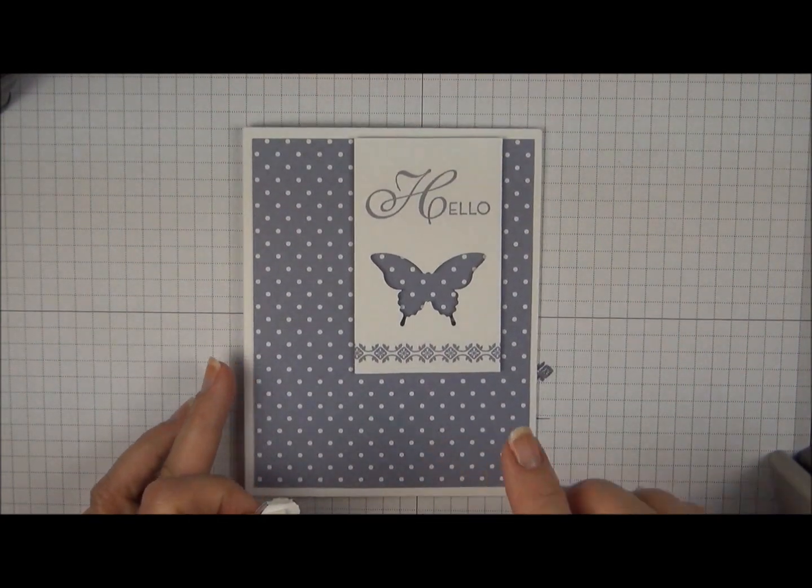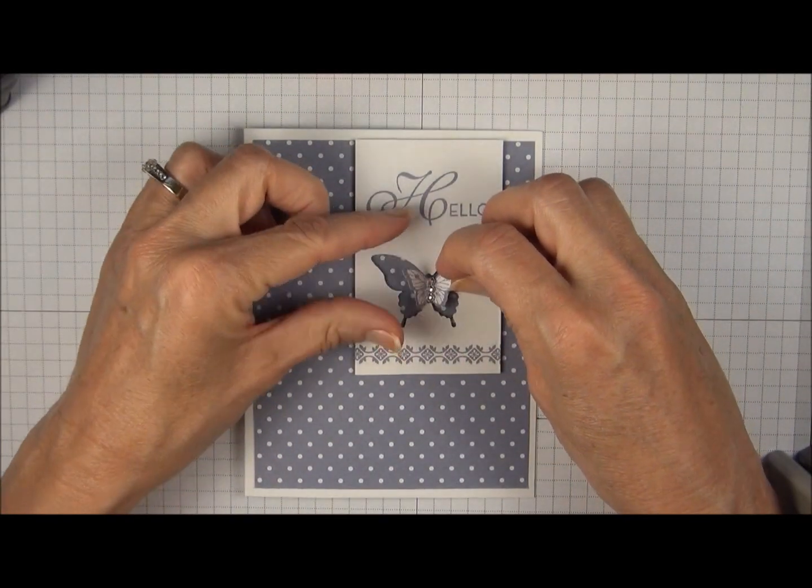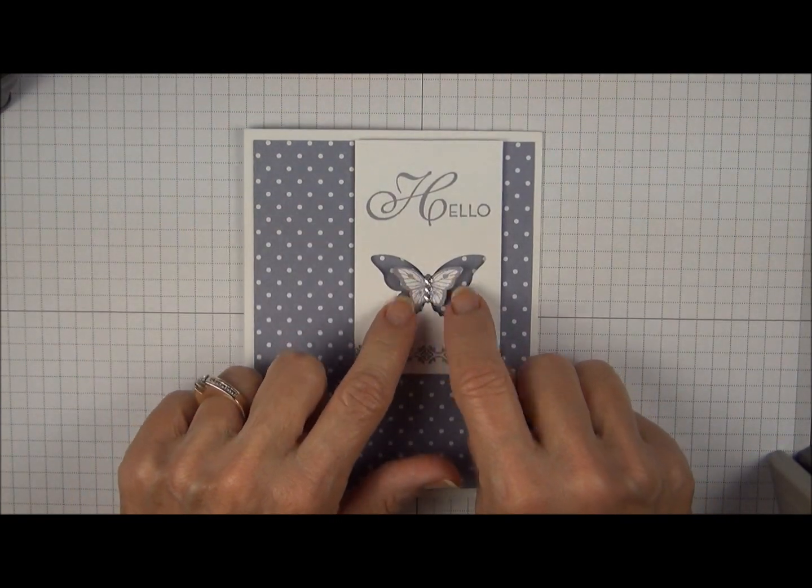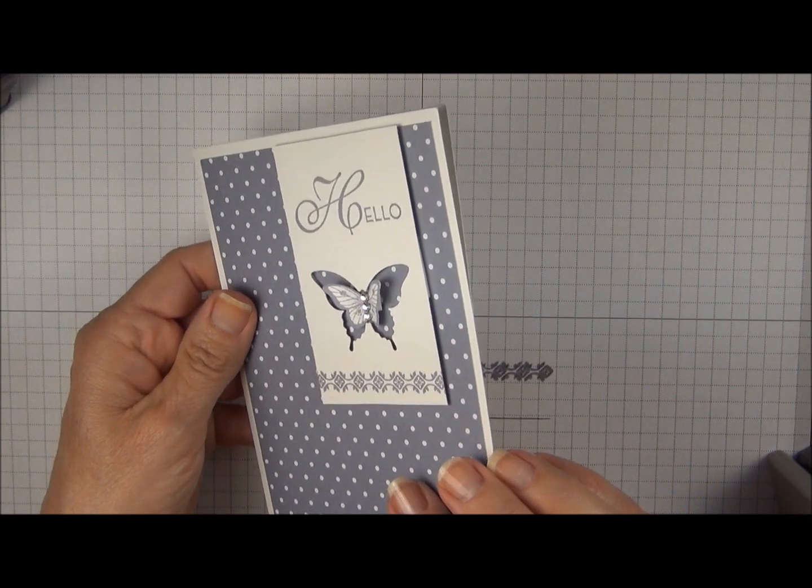So now we're going to add this to the center of this punched opening. And you're just going to line up the rhinestones right in the middle and press that down. And because we have the dimensionals on the wings it keeps them propped up. Isn't that cute?